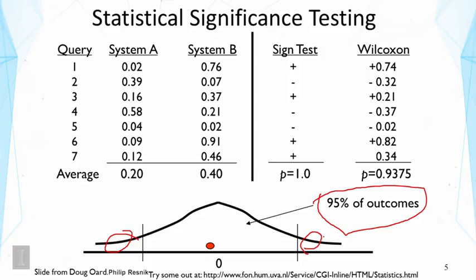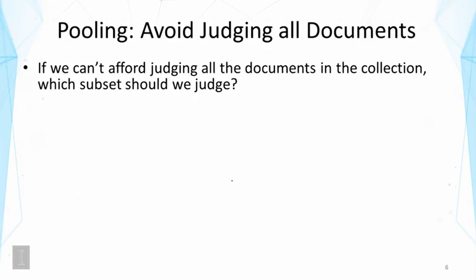There are many different ways of doing this statistical significance test. Now let's talk about the other problem of making judgments. As we said earlier, it's very hard to judge all the documents completely unless it's a very small dataset. So the question is: if we cannot afford judging all the documents in the collection, which subset should we judge? The solution here is pooling.